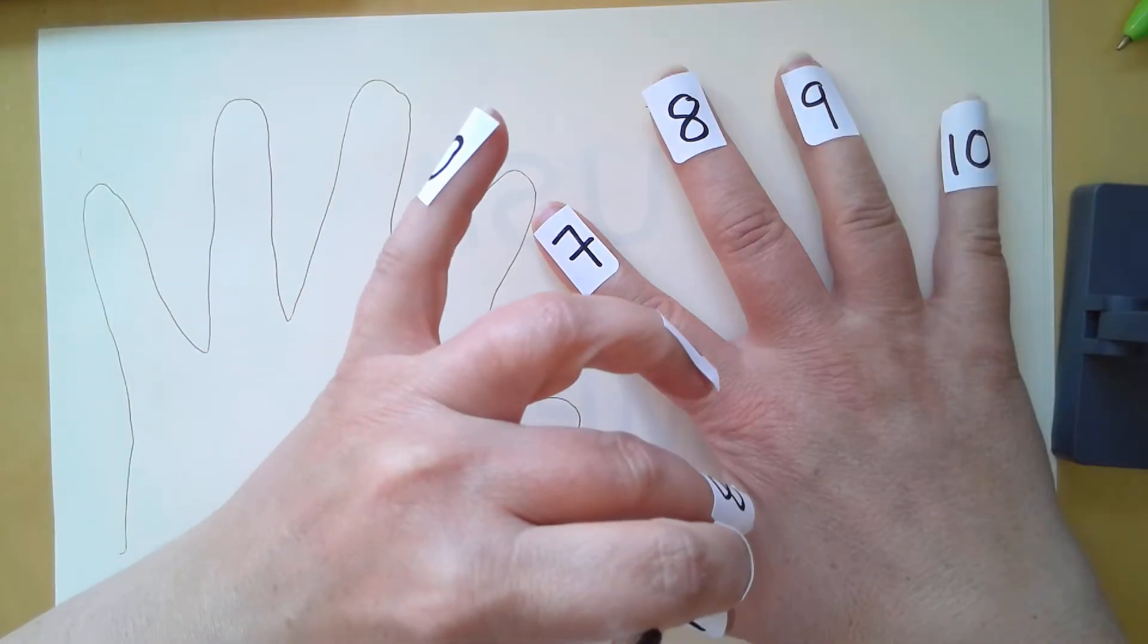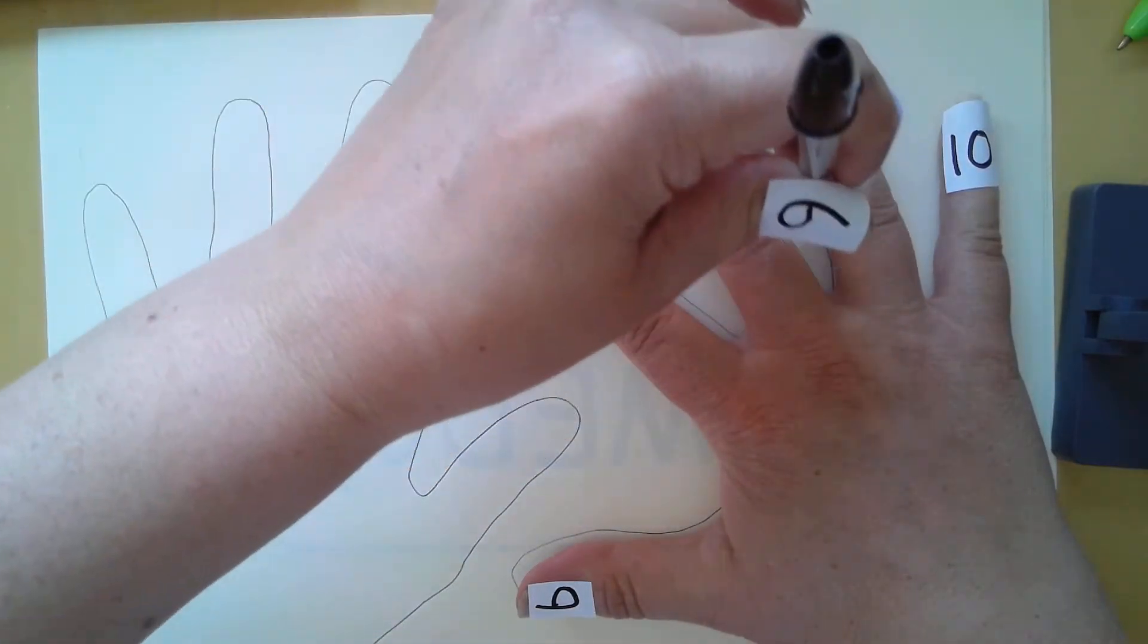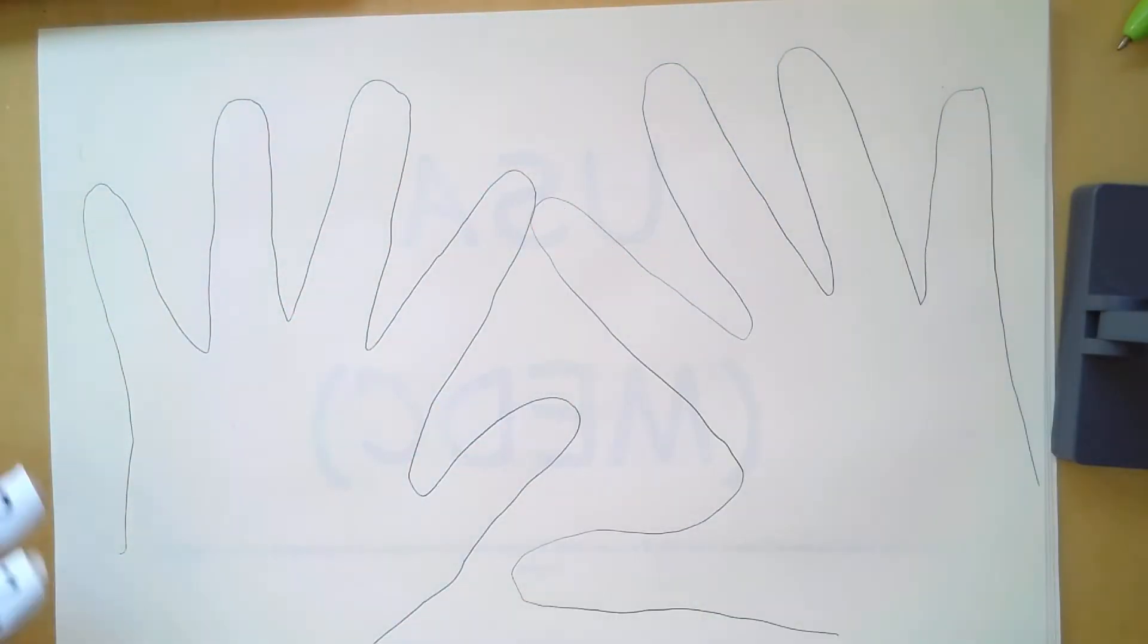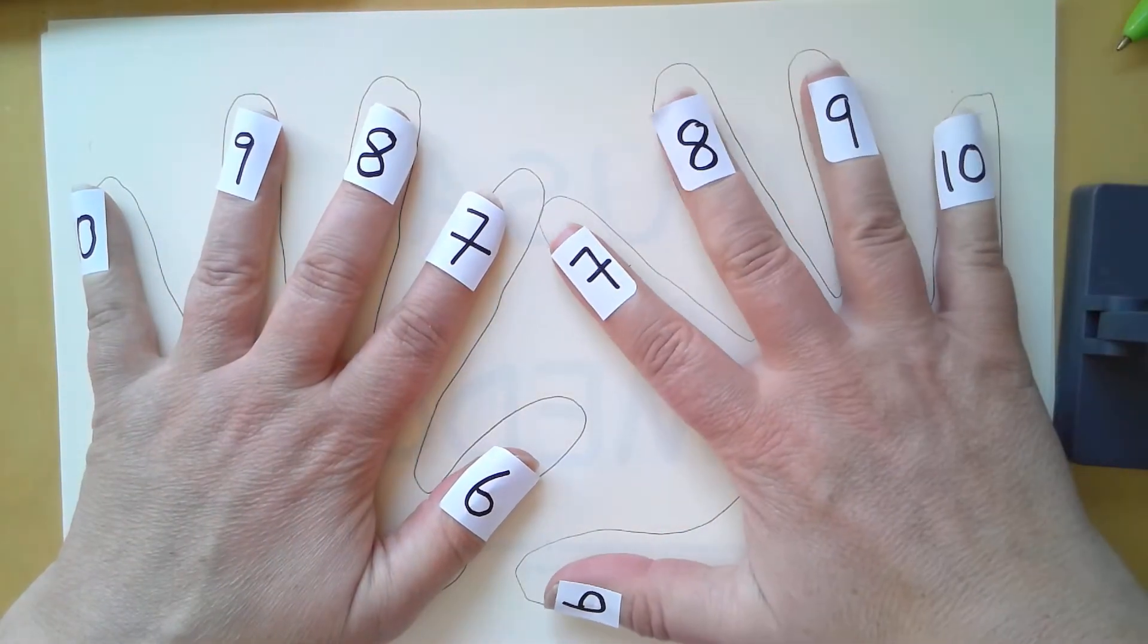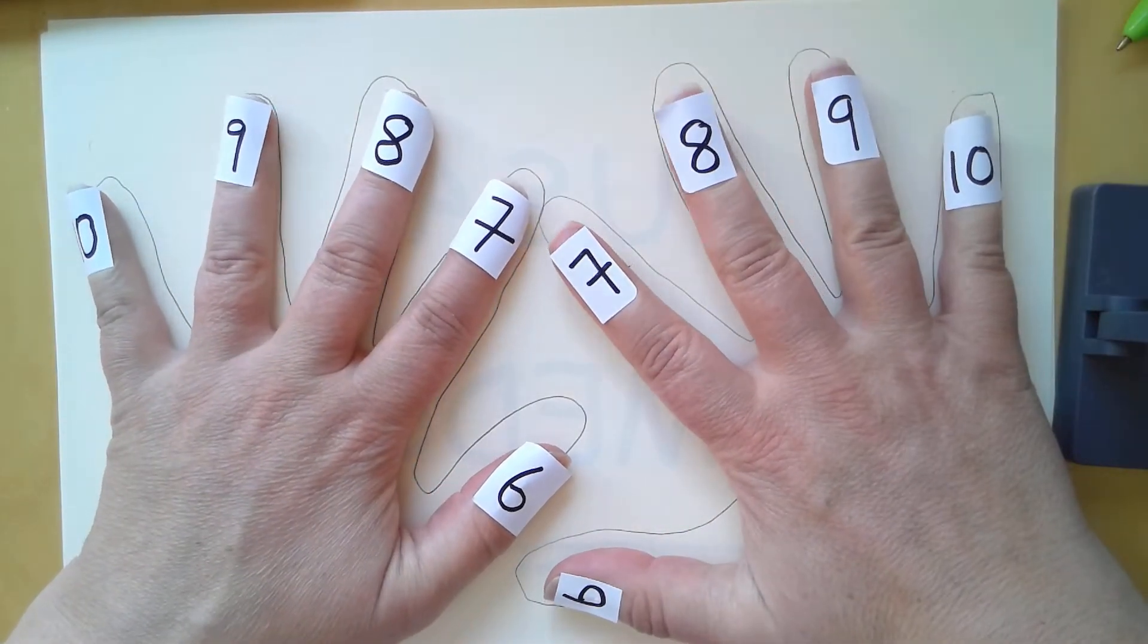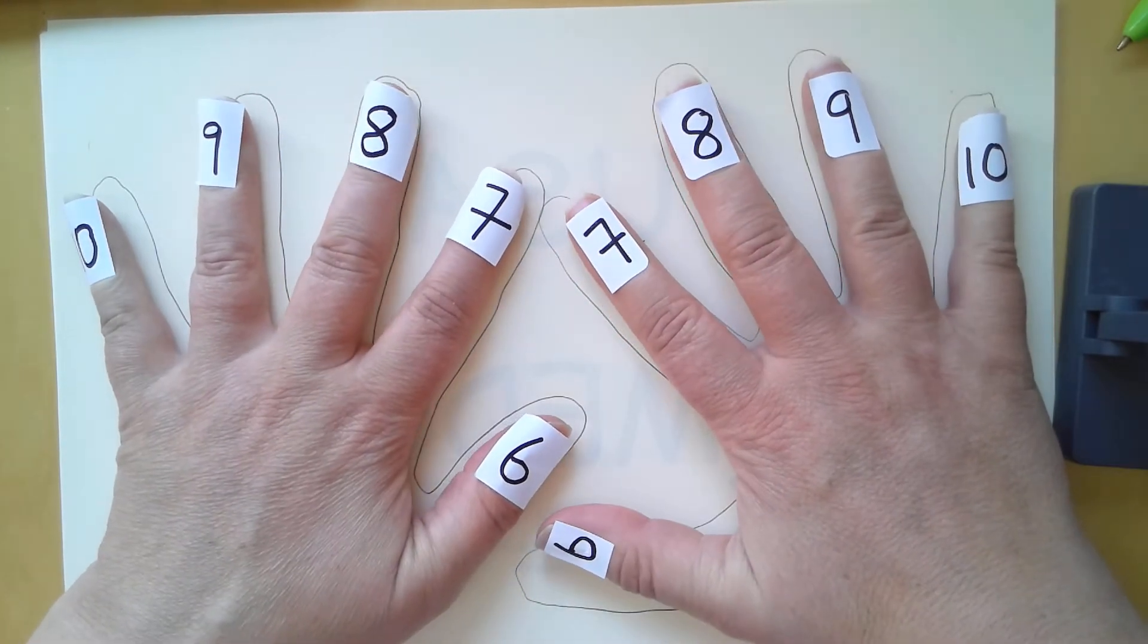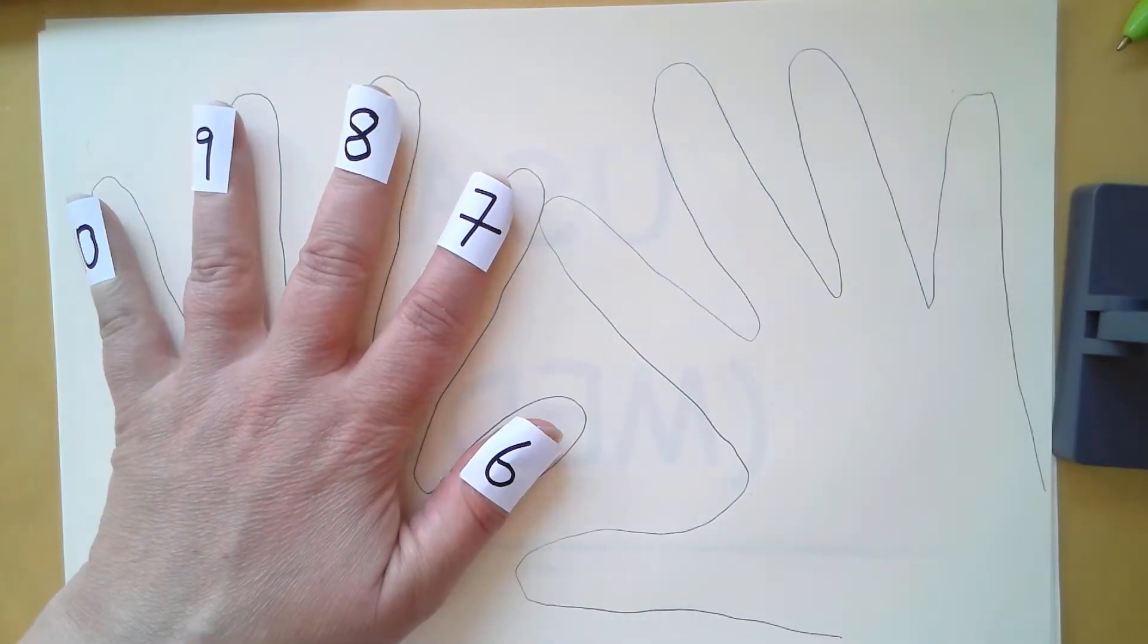I will explain what my fingers are all about in a minute. I've drawn around my fingers and now I'm going to number them just like my fingers are numbered at the moment. I've put stickers on the back of my fingers. You can do this with paper and sellotape if you don't have any stickers.